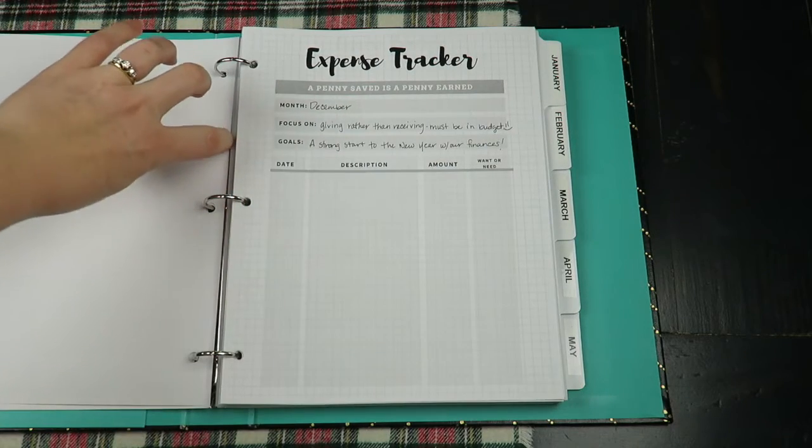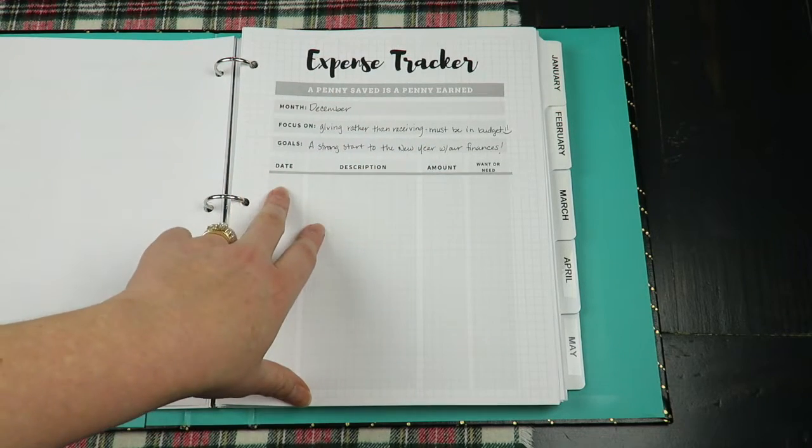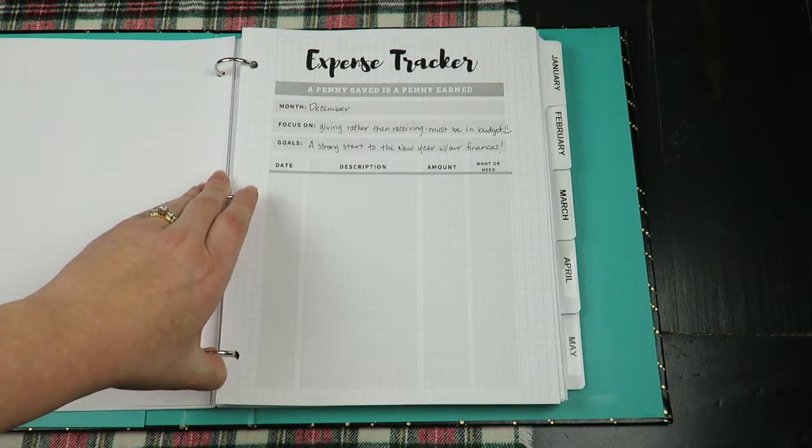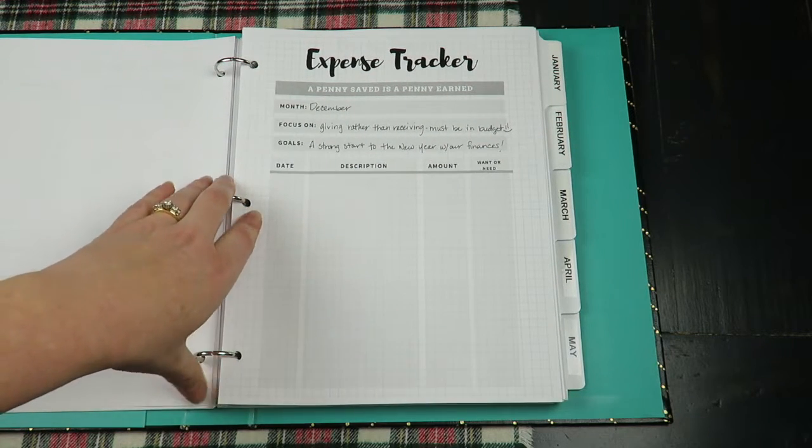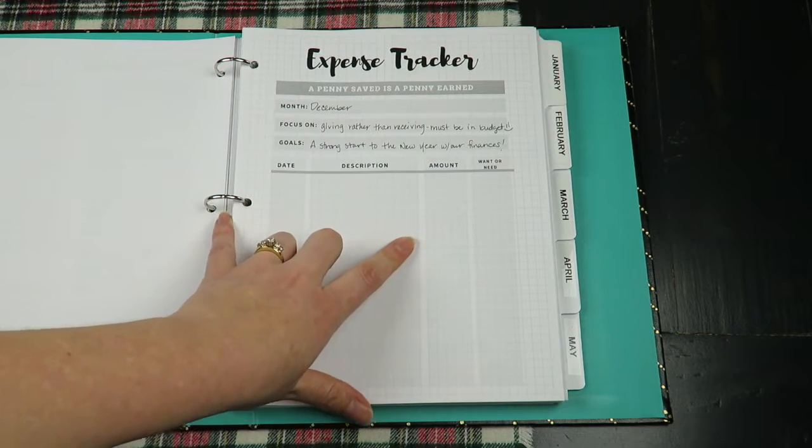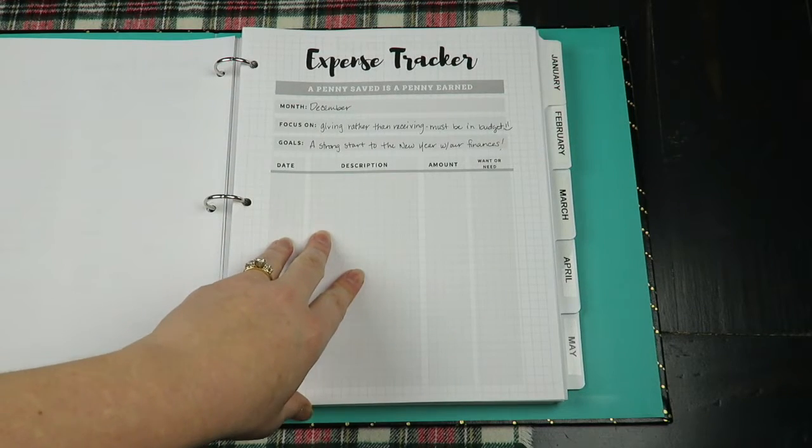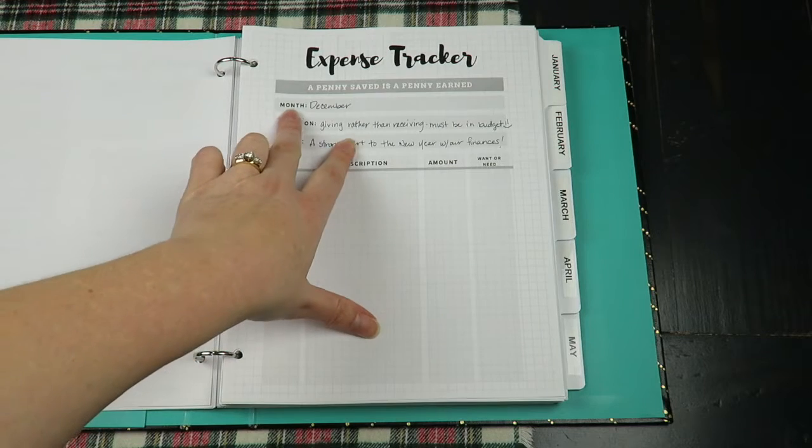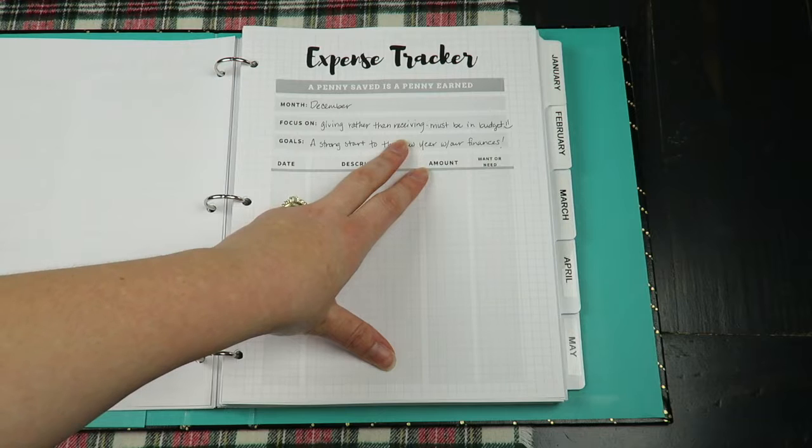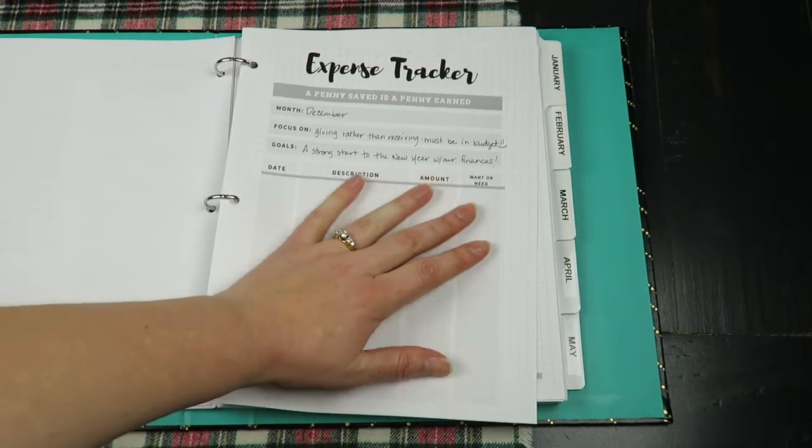Then our expense trackers. My hubby reminded me we shouldn't have any expenses receipts to write down because it's like no spend month, seriously. But I do have some business expenses, I ship packages at the post office, so I will save those receipts and write them down, as well as when we go grocery shopping. For the month of December, I want to focus on giving rather than receiving and I like to give a lot. So my giving has to be in our budget or I have to talk to my husband first about it before I go giving to other people because I don't want it to take away from our budget.